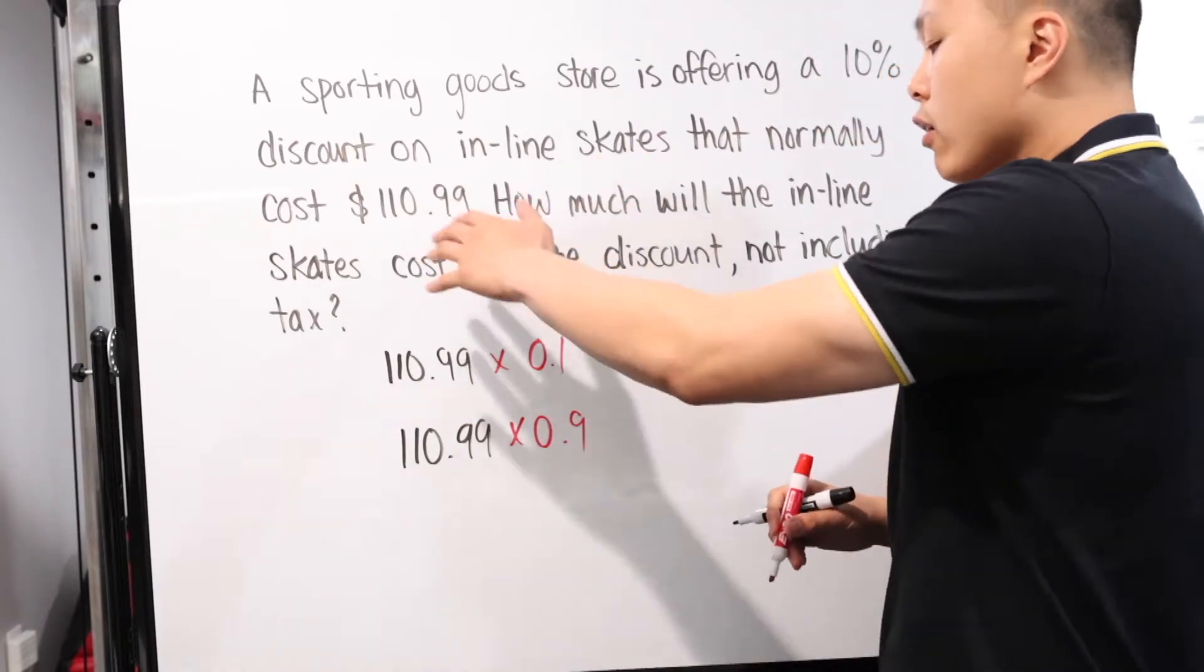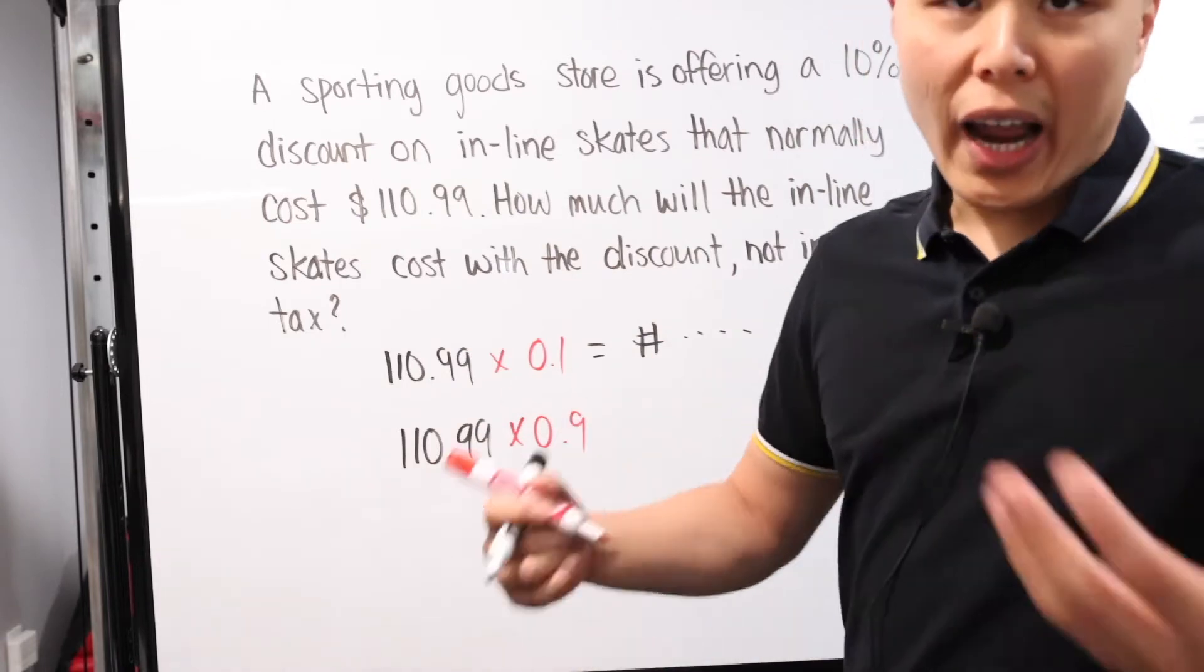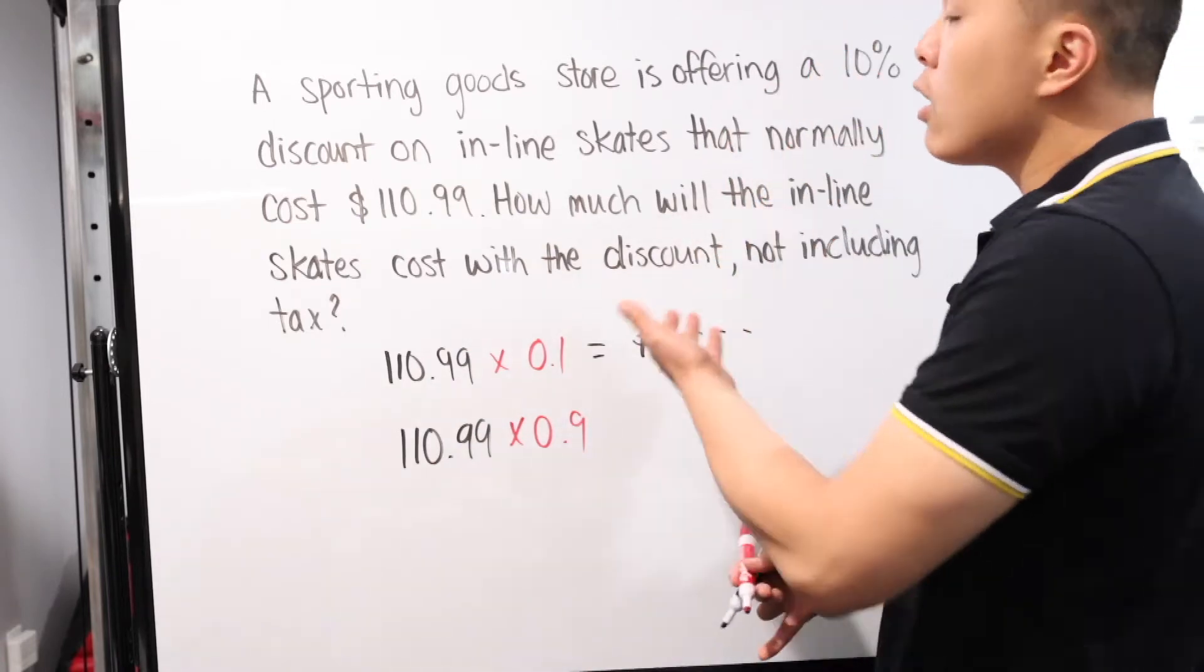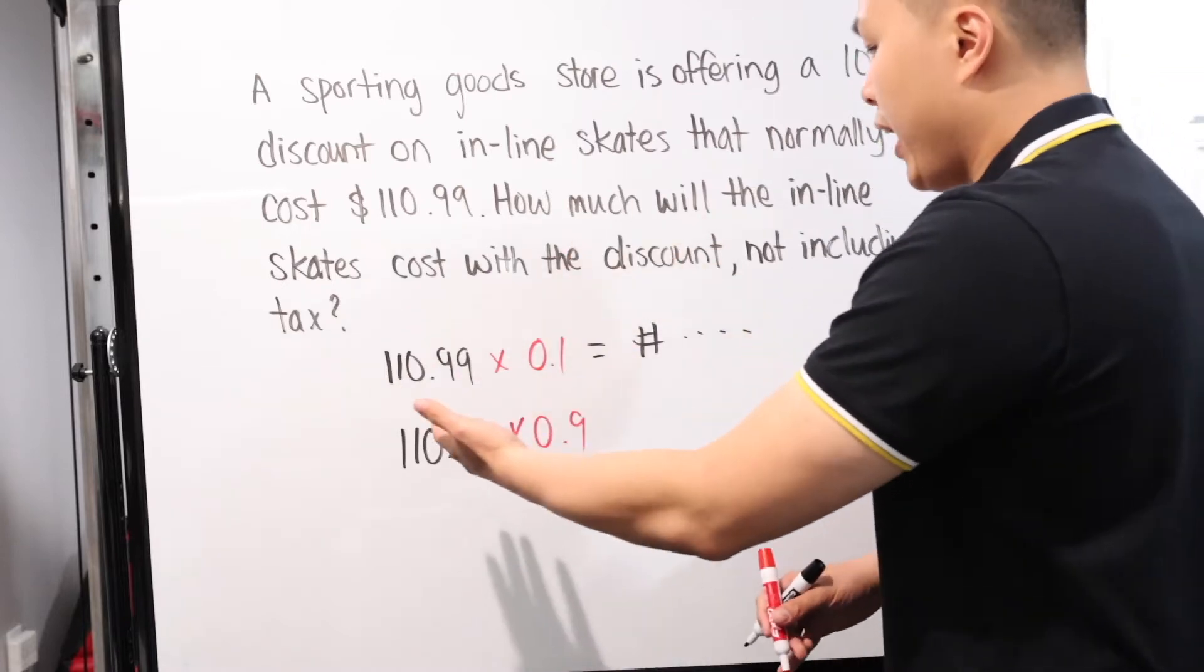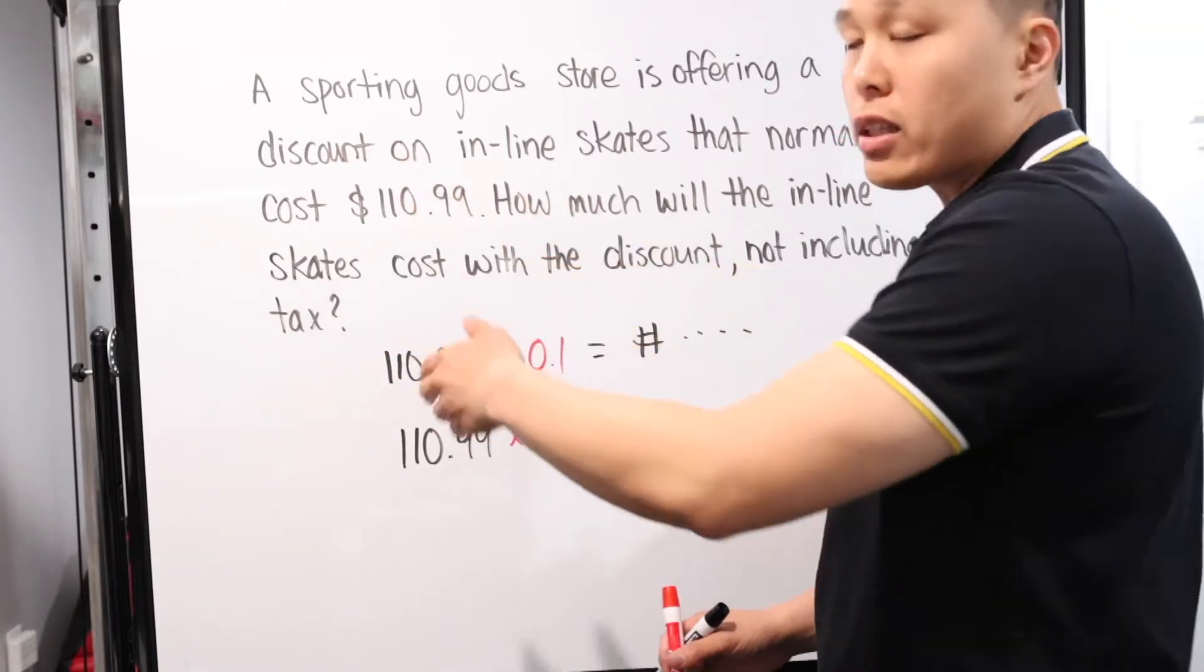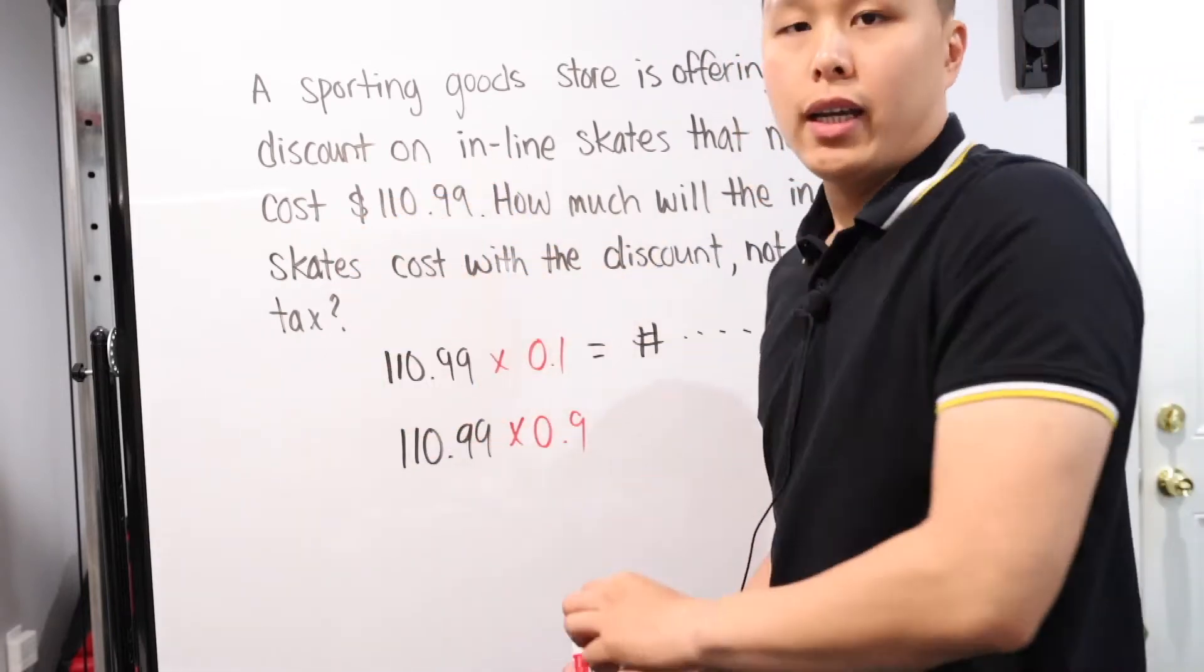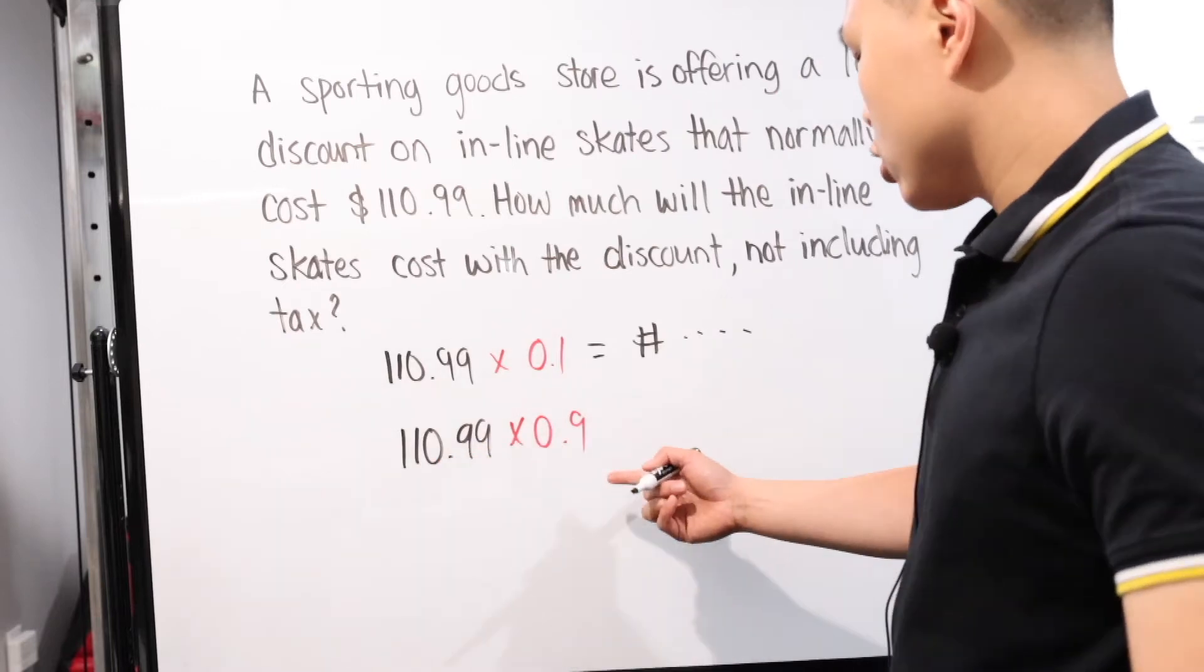A sporting goods store is offering a 10% discount on inline skates that normally cost $110.99. How much will the inline skate cost with the discount not including tax? Like anyone's going to make their life complicated with a standard math word problem by including tax. So how do we solve this problem is fairly simple. We have this original cost which is $110.99, and then we have our 10% off.